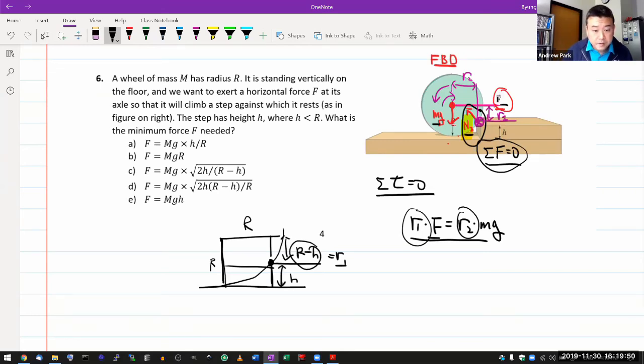Level arm for gravity takes a little more work because I need to figure out this distance. I think I need to draw this right triangle. So it's going to be this leg here. And that's going to be that leg of right triangle, which has one leg as R minus H and hypotenuse as R. So this side should be, let me call that X.